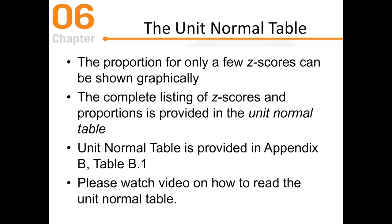The unit normal table — I have a whole video on how to read it. The proportions for z-scores can't all be shown graphically since you can have z-scores like 1.3794 or 2.698. Instead of calculating each individual score, we use a table as a shortcut called the unit normal table. You'll get about five to seven tables throughout the semester; this is your first one. You can find it at the end of your textbook, or Google 'unit normal table.'